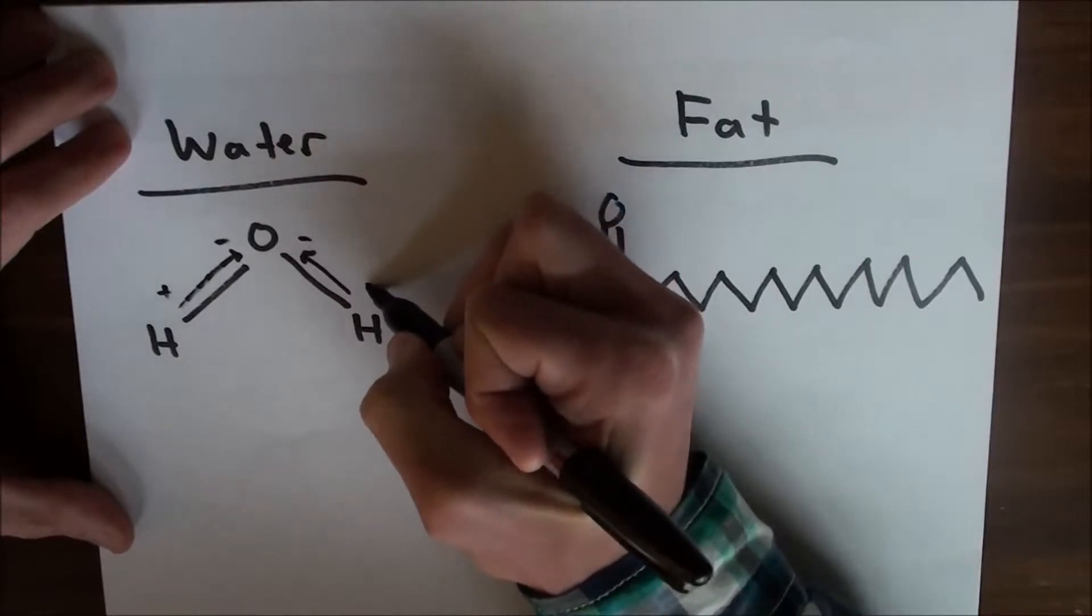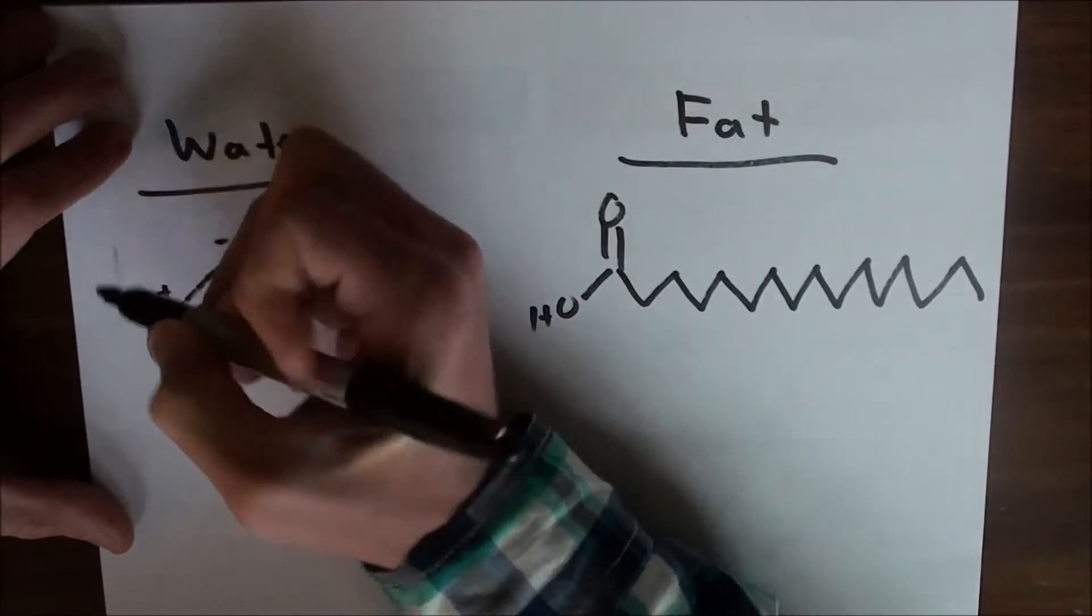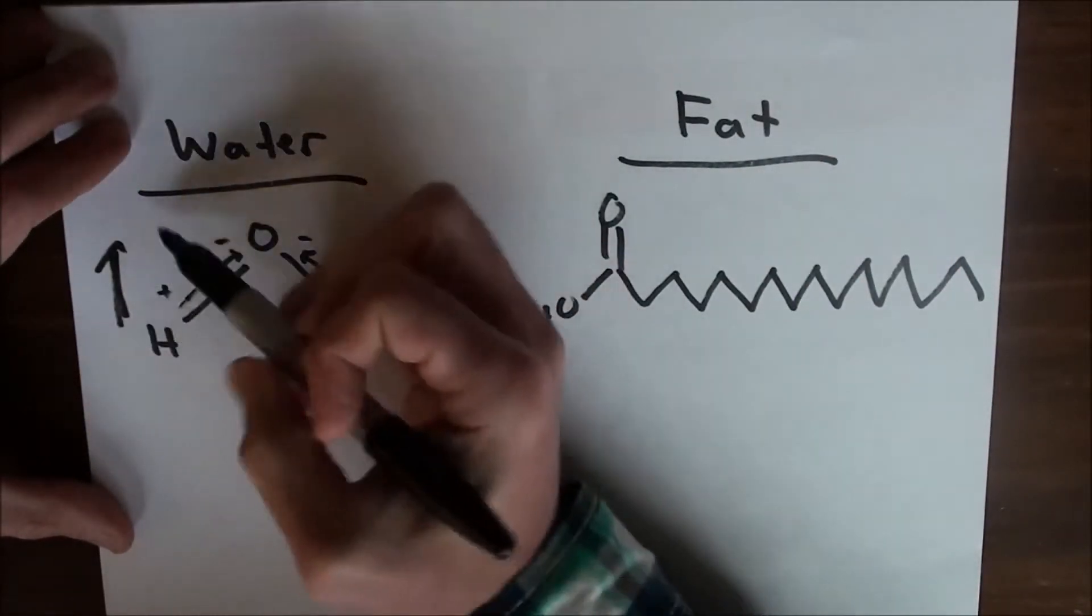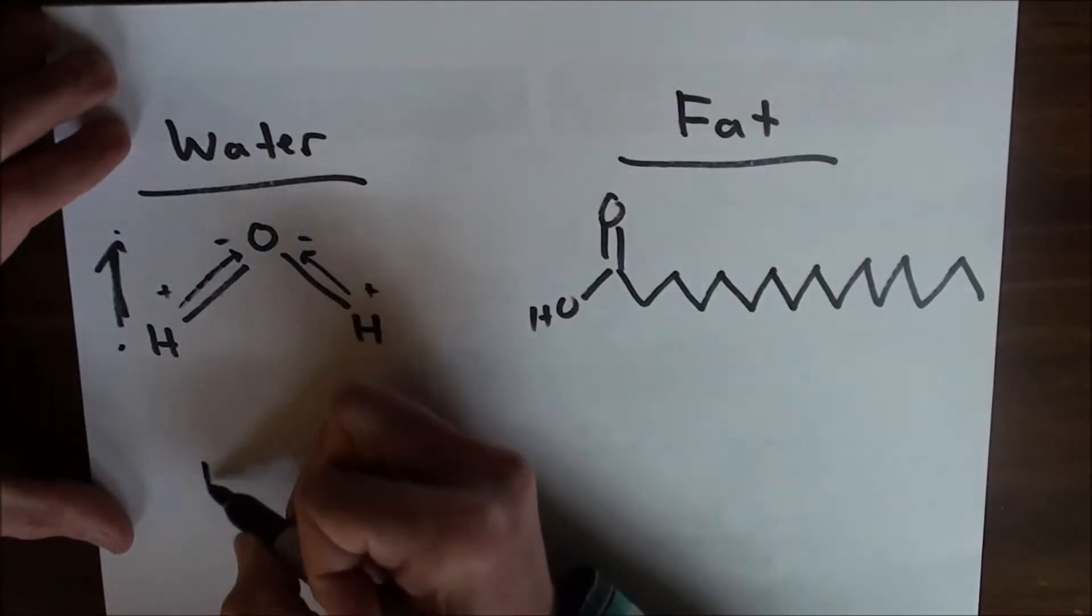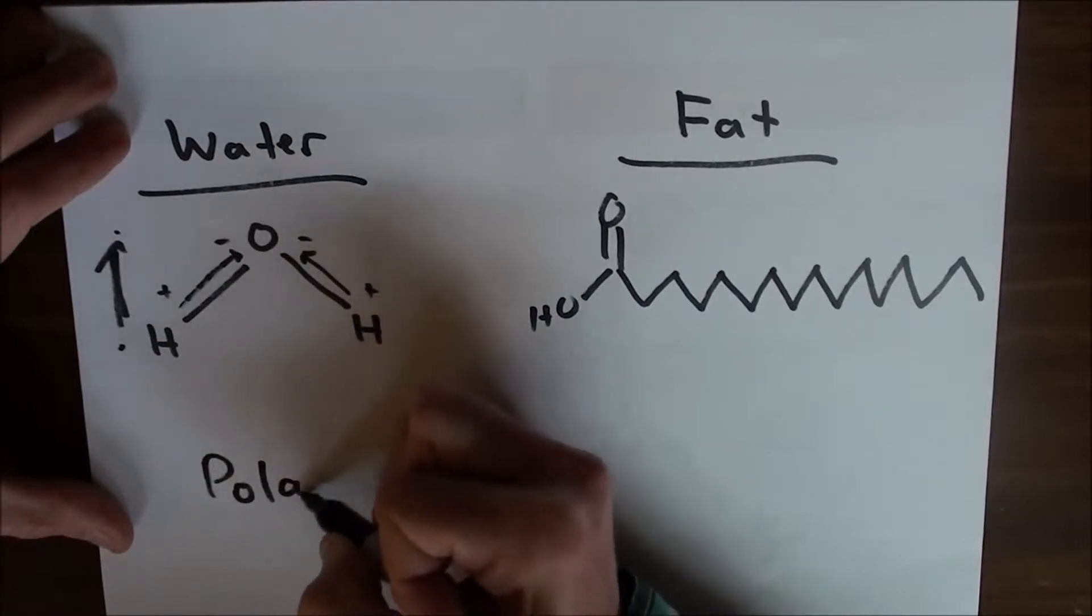This end slightly positive. And so overall, there is kind of a net negative gradient between here and here. And these type of molecules are called polar.